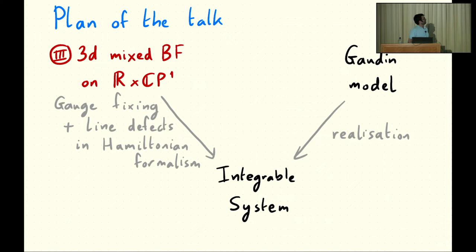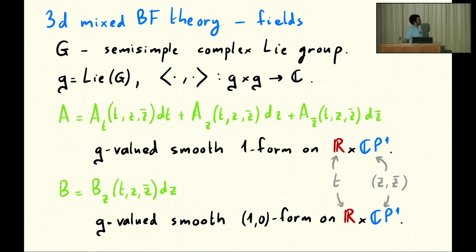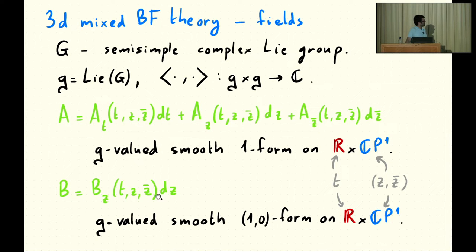Now let me turn to the 3D mixed BF theory. It's defined by similar data to the Gaudin model: a semi-simple complex Lie group with Lie algebra G, and the same bilinear form as before. The fields of the model are A and B. A is a G-valued one-form, smooth on R cross CP1, with legs in the three directions DT, DZ, and DZ-bar, where T is the coordinate on R and Z, Z-bar are the coordinates on CP1. On the other hand, B is a (1,0)-form relative to the complex structure on CP1, so it just has a leg in the direction DZ.